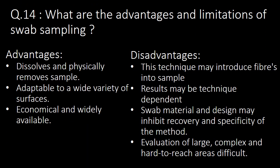The next question: what are the advantages and limitations of swab sampling? Three major advantages are: first, it dissolves and physically removes the sample; second, this technique is adaptable to a wide variety of surfaces; and third, it is economical and widely available. Disadvantages include: it may introduce fibers into the sample, it is technique-dependent and results may vary, swab material and design may inhibit recovery and specificity of the method, and evaluation of large, complex, and hard-to-reach areas is difficult.